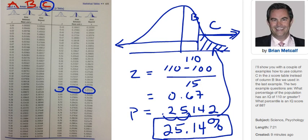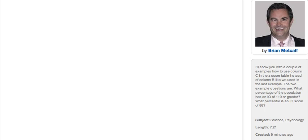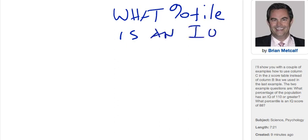The other example where we would want to use column C is when we have a question that is anywhere in this bottom half of the distribution. So let me clear this up and give you an example. So let's say that we want to know what percentile is an IQ score of 88. So if somebody gets an 88 on an IQ test, because I don't think you would be able to do this if you had an 88 on your IQ test. So if somebody gets an 88 on an IQ test, what percentile are they in?